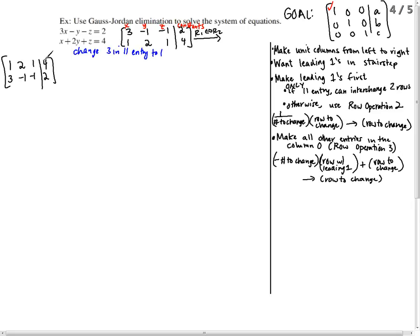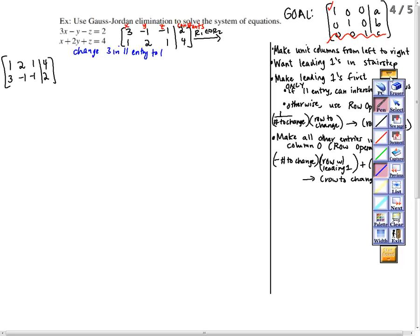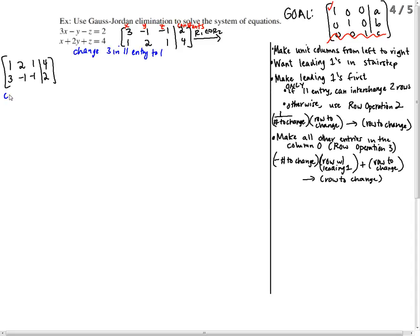I want to point out something else real quick before we get going too much further. If you notice, this matrix I wrote over here as my goal has three rows, row 1, row 2, row 3. We don't have three rows in our original augmented matrix, so we're not going to have this. So our answer is going to look a little bit different, but we're still going to use this as our prototype. This is still our goal.